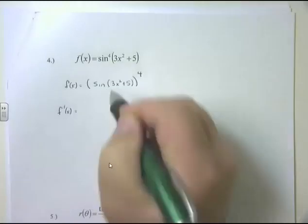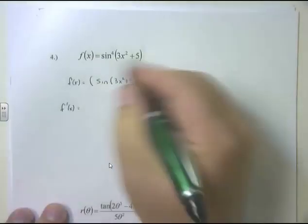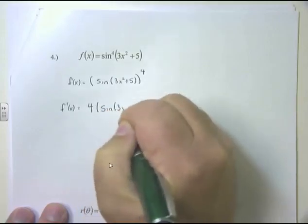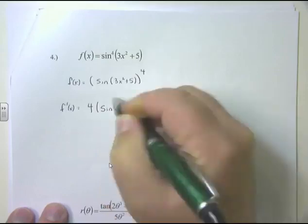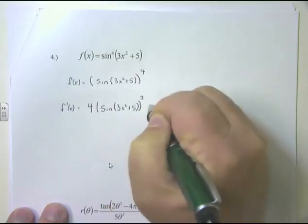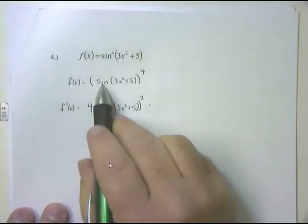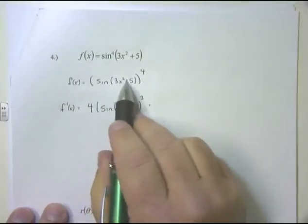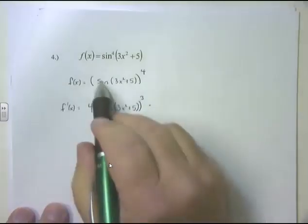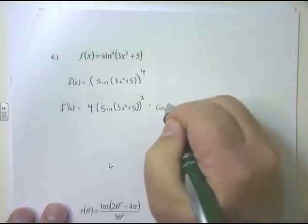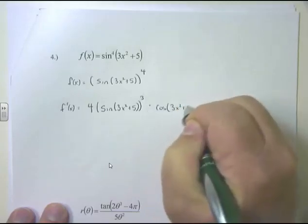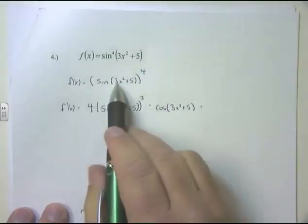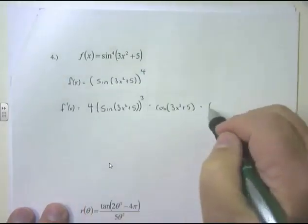Chain rule: take derivative of the outside — 4 pops out front. The inside, sin(3x² + 5), stays the same, raised to the third power. Times the derivative of the inside, which is sin(3x² + 5). Now sine is on the outside; 3x² + 5 is on the inside — that's another chain rule. Derivative of sine is cosine; the angle 3x² + 5 stays the same. Times the derivative of the inside, 3x² + 5, which gives 6x.